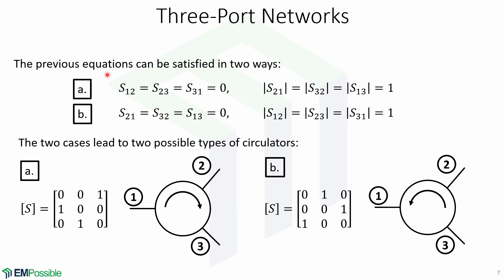The previous set of equations can be satisfied in two ways: Option A and Option B. The two cases lead to two possible types of circulators. Circulator A is a clockwise circulator with this scattering matrix. Circulator B is a counterclockwise circulator with this scattering matrix.